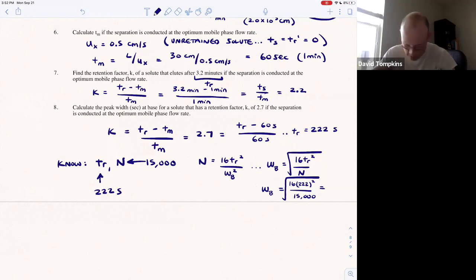And here we get 7.25. Remember that TR and width are both in the same unit, and N is unitless. So this is width at the base equal to 7.25 seconds.